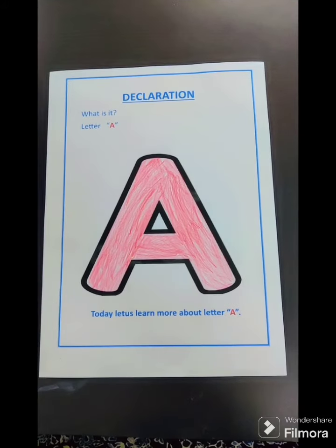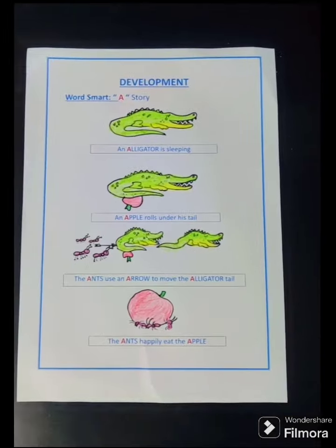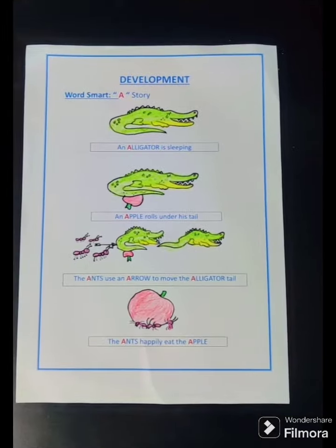Let us learn more about letter A. A story: An alligator is sleeping. An apple rolls under his tail. Ants use an arrow to move an alligator tail. An ant happily eats an apple.